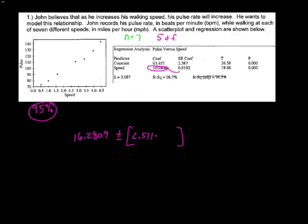Look at this, the standard error is literally right next to the slope, so 0.8192. I mean, the only way you can go wrong is if you accidentally use these y-intercept numbers. So 16.2809 minus 2.571 times 0.8192. That gives me the low end. The slope could be as low as 14.17 and could be as high as 18.39.